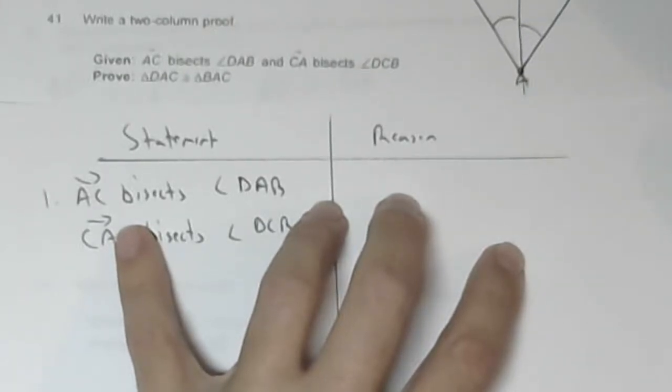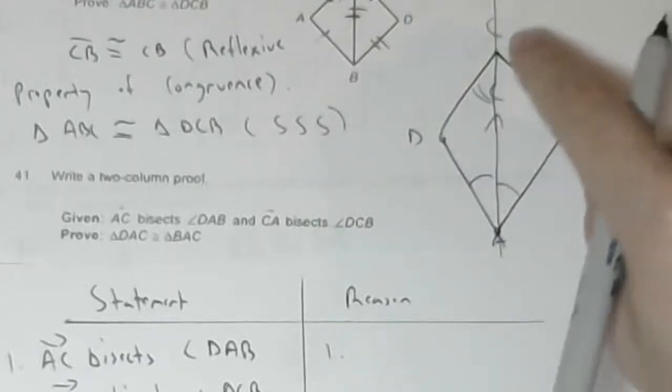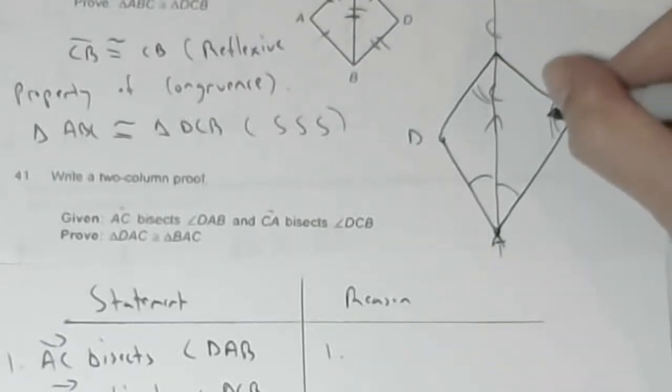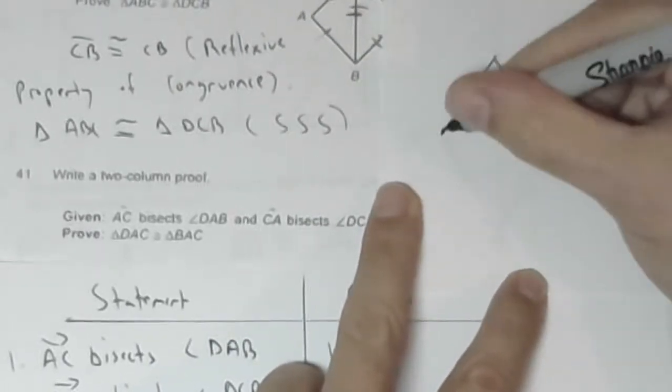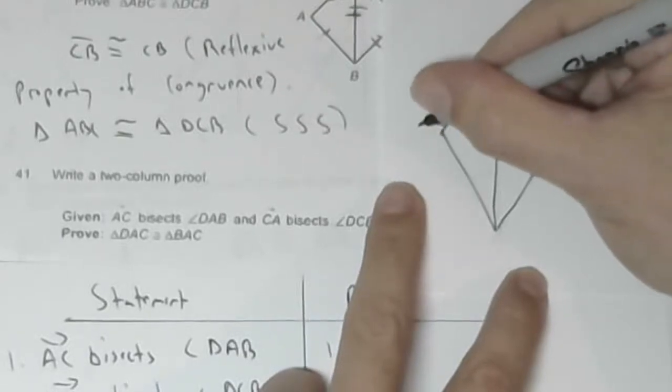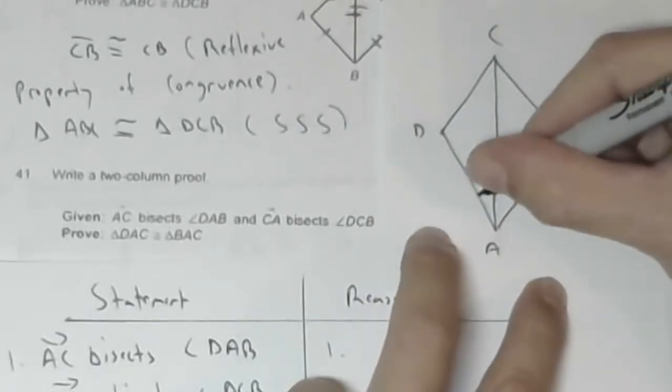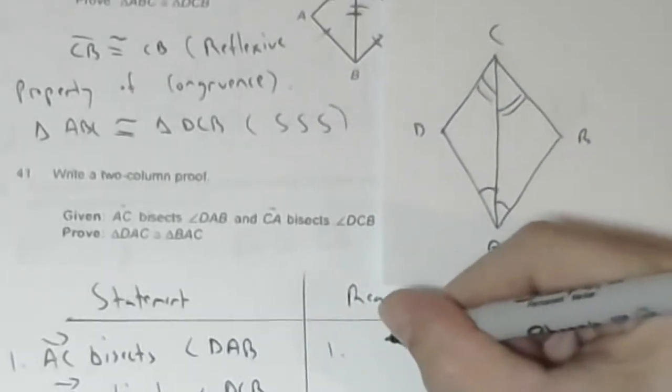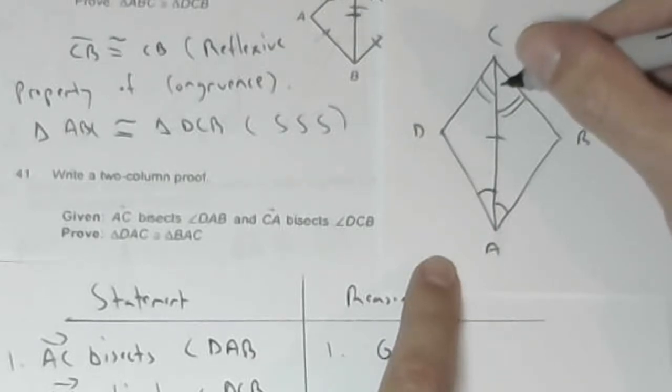Ray, this will be DAB. Ray AC bisects DAB. And CA bisects DCB. It doesn't make sense. AC bisects DAB and CA bisects DCB, I guess. It can't go with these because AC doesn't bisect anything. And my other problem is that these are rays. So if I have two rays this way, I really have a line. So then these two angles are equal.